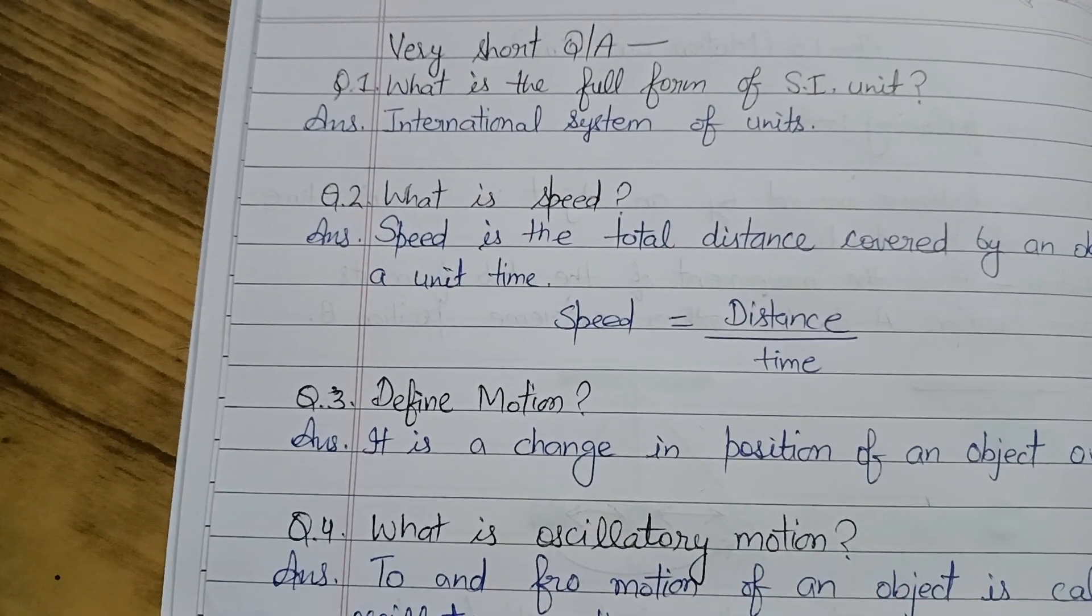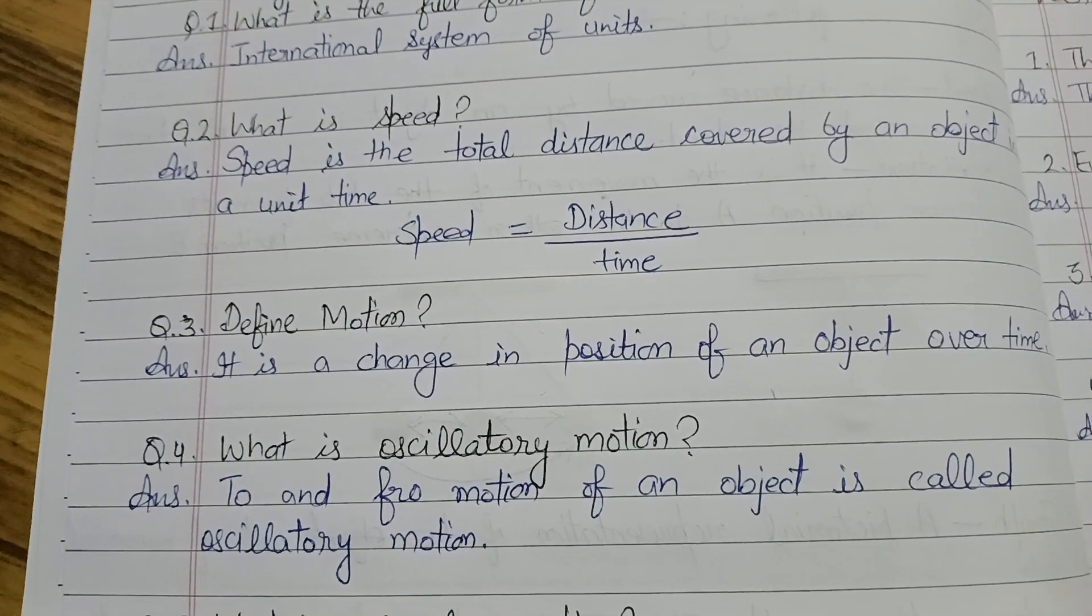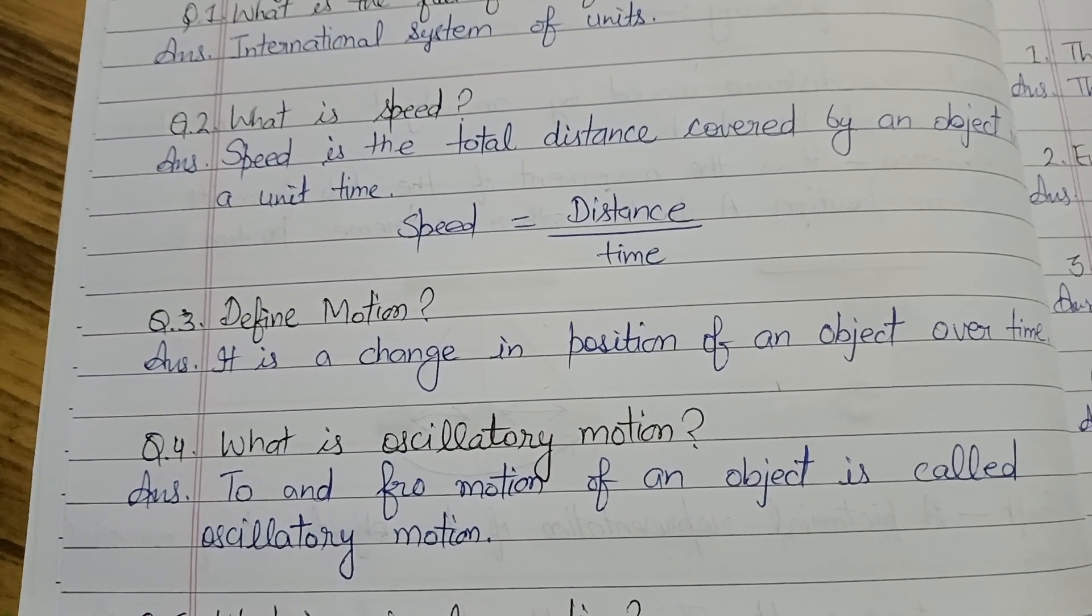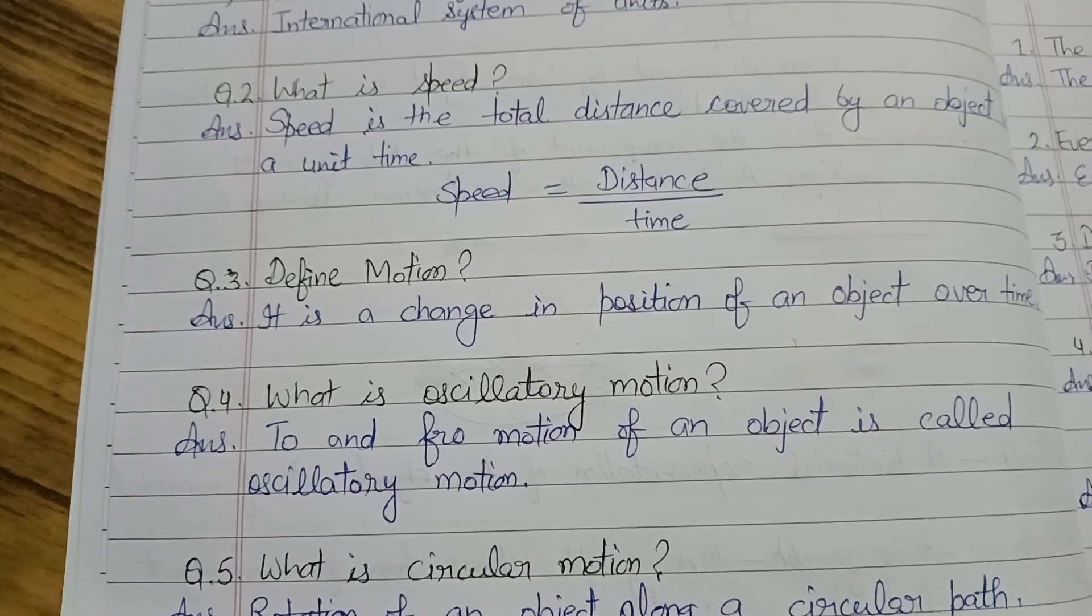Very short question answers. What is international system of units? Speed - total distance in the unit time, distance upon time. Motion - change in position of an object over time. With no object, we will say that it is in motion. Oscillatory motion.